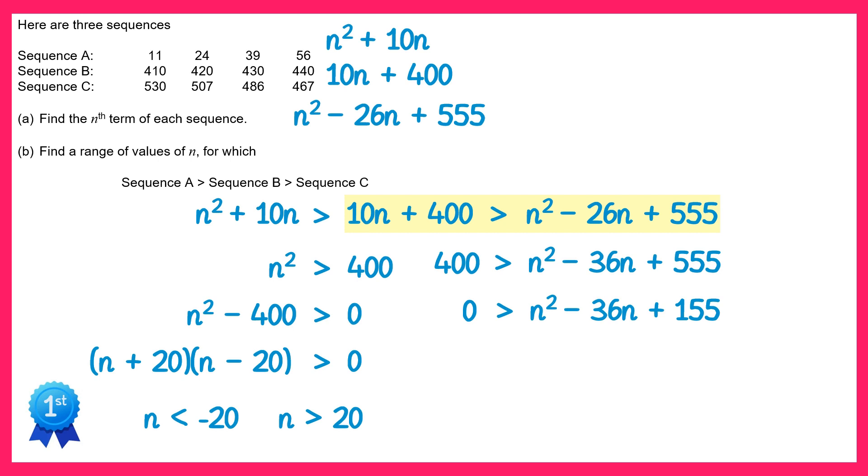Now if 0 is greater than this quadratic, then this quadratic is also less than 0, so we can write this the other way around like this. This quadratic will also factorise. It's n take 31 and n take 5 is less than 0, and the solution to this inequality can be written down as one inequality, which is n is in between 5 and 31.